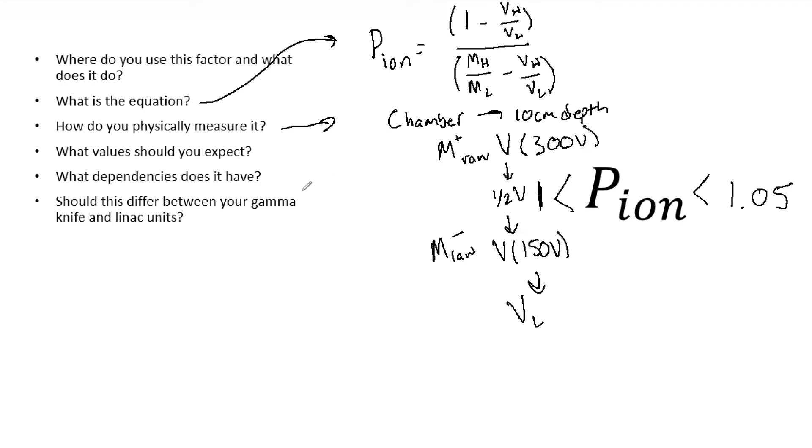So now what dependencies do we have? The first one is based on our equation here, obviously you see a lot of voltages. So our chamber bias is going to be our first dependency, and the bias is going to change the speed of ion collection.